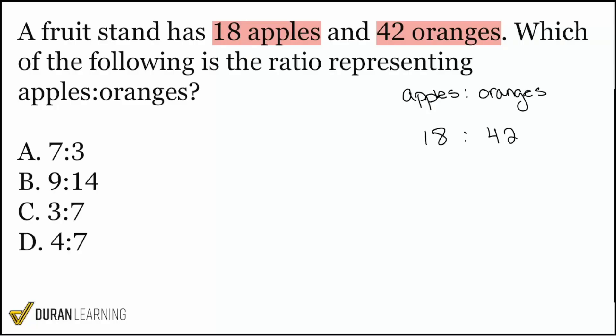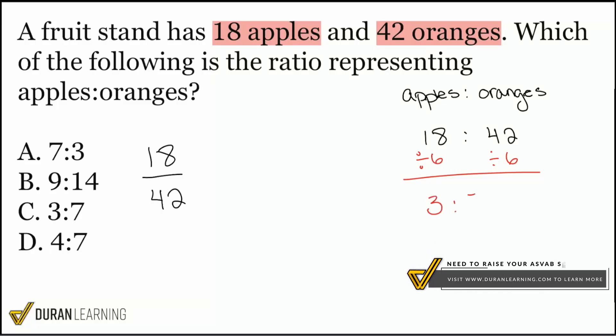So to simplify, we can treat it like a fraction, 18 over 42, or you can just ask yourself the same question: What number can I divide out of both 18 and 42? And what's the biggest number? We want to think about that biggest value. And if you're saying six, absolutely correct. We'll divide out the six on the left and the right. Once we do that, we're going to have three to seven. So again, the ratio of 18 to 42 is equivalent or the same as a ratio of three to seven, which is answer choice C.